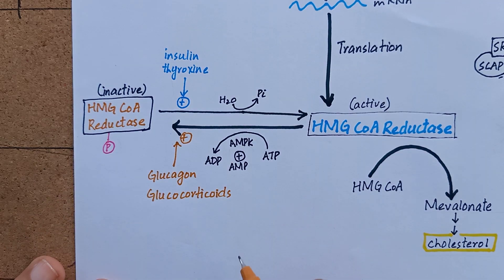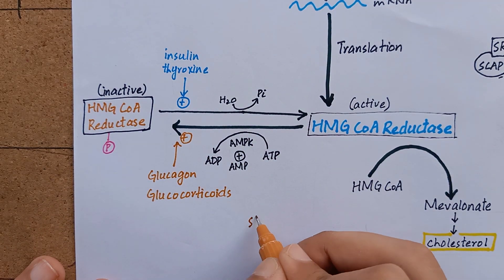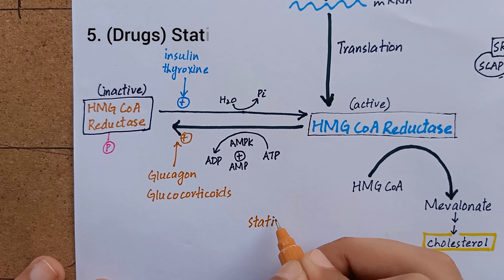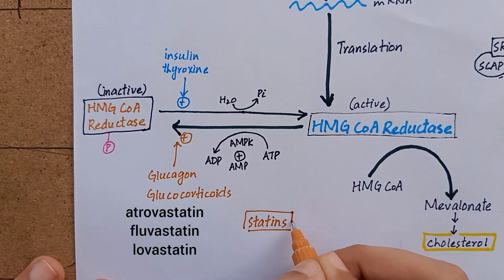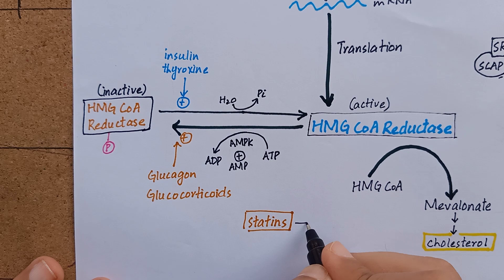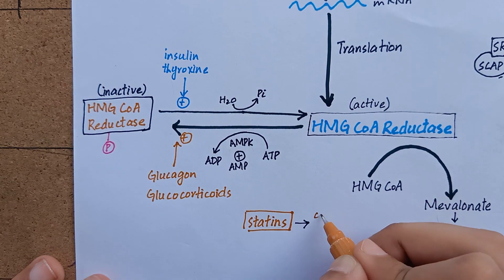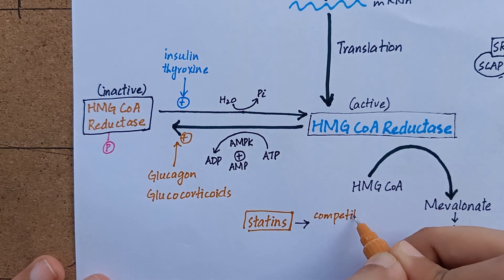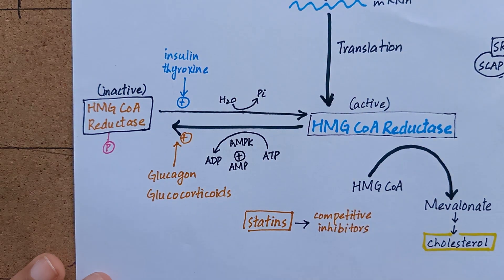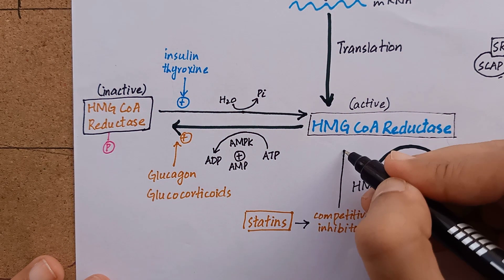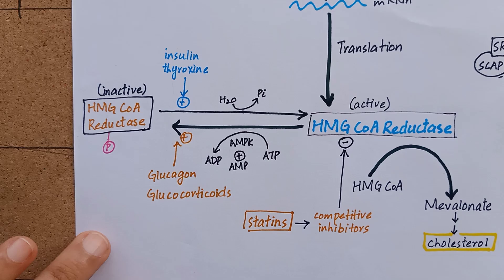The last metabolic control for the regulation of cholesterol synthesis is drugs. Statins like atorvastatin, fluvastatin, lovastatin, etc. are the structural analogs and competitive inhibitors of HMG-CoA reductase. They are used to decrease plasma cholesterol levels in patients with hypercholesterolemia. Fasting also reduces the activity of HMG-CoA reductase.